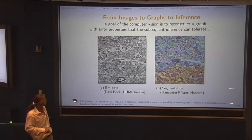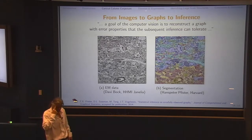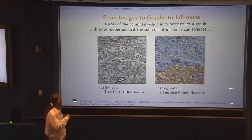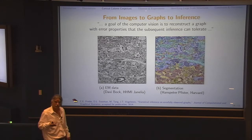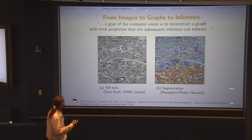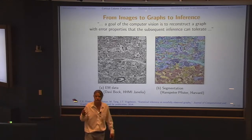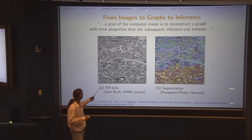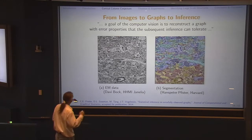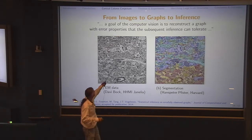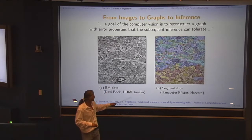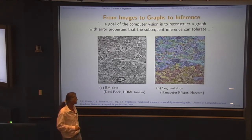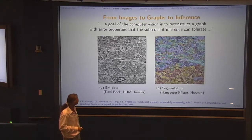We need to find out what types of information will be most valuable, because this petabyte of data is hard to search. So here's a slide that's designed to give us some idea of the problems that we face. I have this claim. I'm not a computer vision guy, so I can say the goal of the computer vision is to serve me - to reconstruct a graph with error properties that the subsequent inference can tolerate. Here's one slide of EM from a rodent from Davy Bach at Janelia. We see synapse in there someplace.